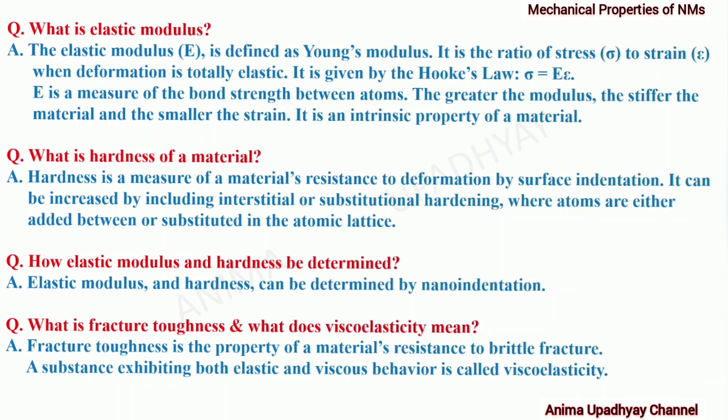What is elastic modulus? The elastic modulus, capital E, is defined as Young's modulus and it is the ratio of stress to strain when deformation is totally elastic, where stress is given by sigma and strain by epsilon. It is given by Hooke's law: sigma equals E times epsilon, where E is a measure of the bond strength between atoms. The greater the modulus, the stiffer the material and the smaller the strain. It is an intrinsic property of a material.